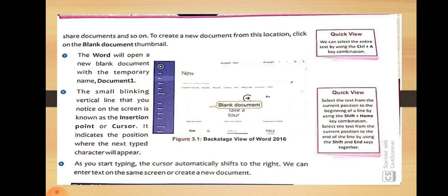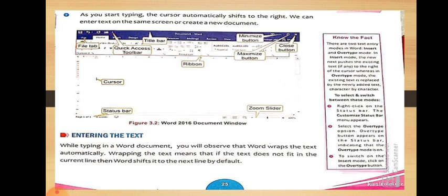You can also create a new document there. The Word document window has different tools such as the File tab, Quick Access Toolbar, Title Bar, Maximize and Minimize button, the Close button, the Ribbon, the Cursor, the Zoom Slider, and the Status Bar.